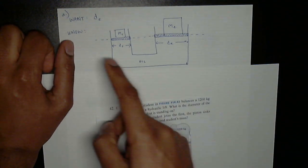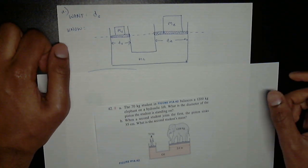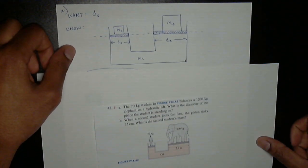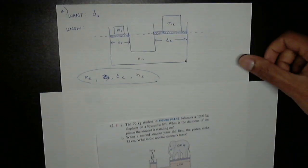And also in this figure I drew, it's important to note that both platforms in this case are at the same height. That's what the dotted line represents. So what we know, we're given the mass of the elephant, the diameter of the elephant, and the mass of the student. And we want the diameter of the student. So we're trying to write the diameter of the student in terms of everything that we know already.